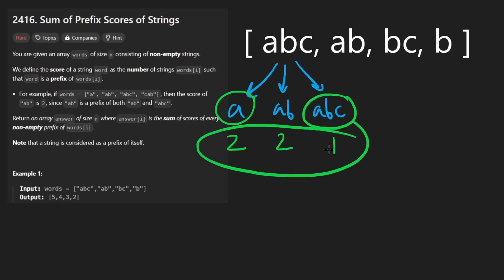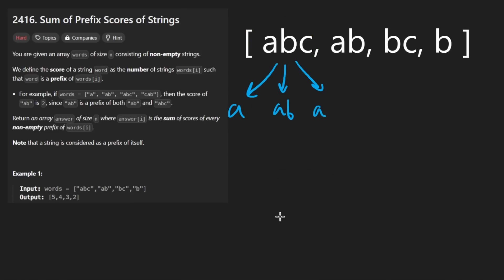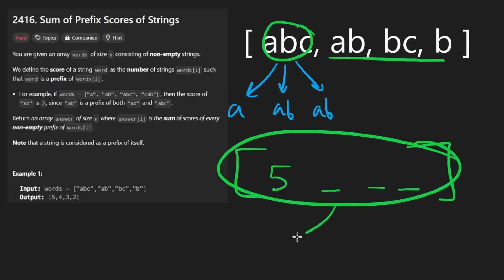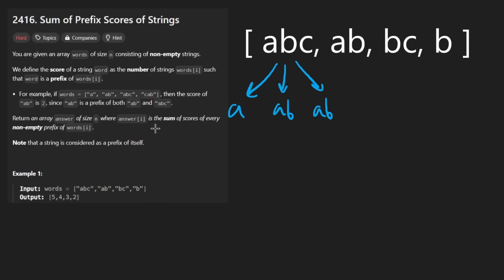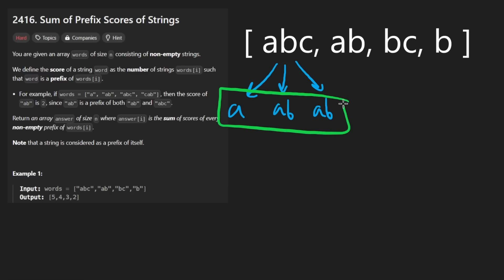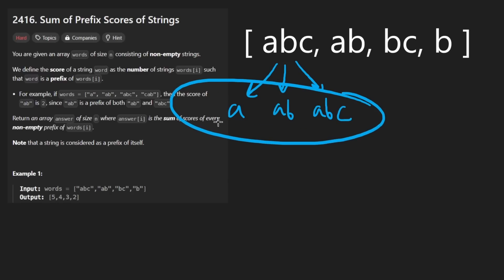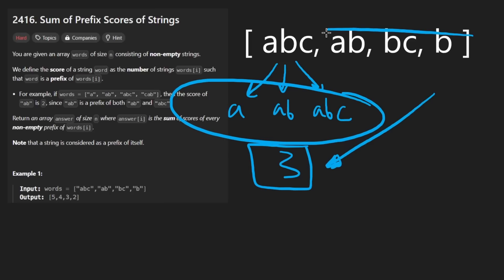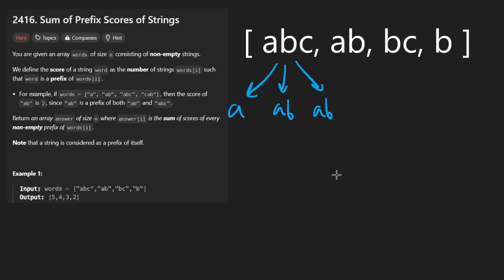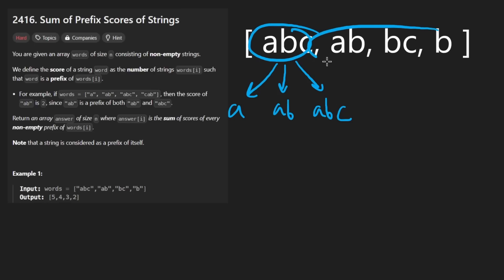The count of prefix 'a' is two, 'ab' is two, and 'abc' is one — it only shows up in one word. We add those up and get five. We do this for every word and return the results as an array. One thing to notice: the minimum score for a given word is never less than the length of that word, since each of its own prefixes will appear at least once. But that observation doesn't save us much time because we still need to look at all other words.